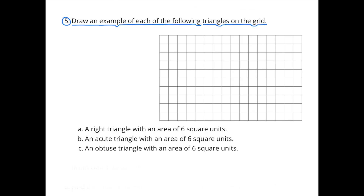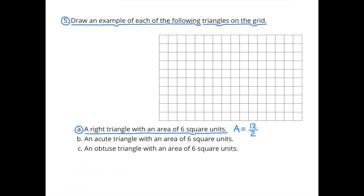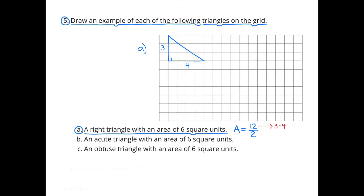Number 5. Draw an example of each of the following triangles on the grid. A: a right triangle with an area of 6 square units. First I need to think of some dimensions for a rectangle that would equal 12, like 3 by 4. A triangle has half the area of a rectangle, so half of 12 is 6. If I make a triangle with a base of 4 and a height of 3, its area would be 6, because it's half the size of a rectangle. I made sure it was a right triangle by having the height perpendicular to the base.